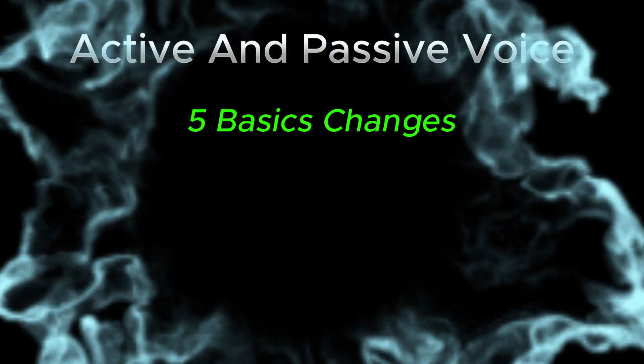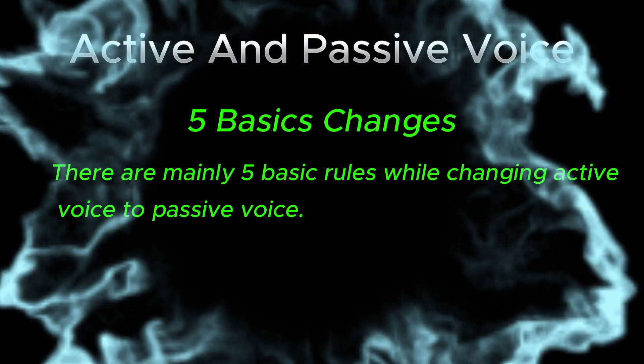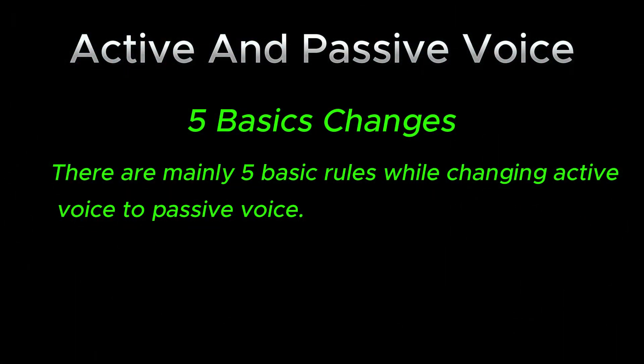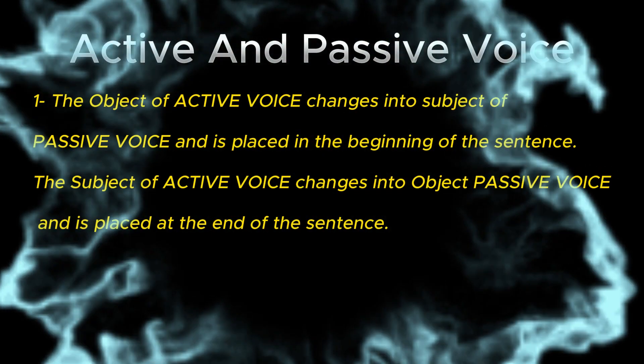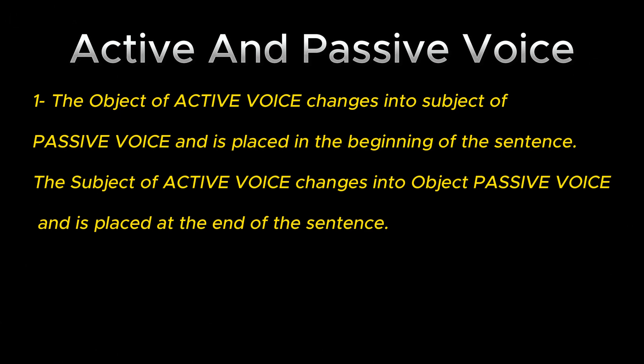There are mainly five basic rules while changing active voice to passive voice. One: the object of active voice changes into the subject of passive voice and is placed in the beginning of the sentence. The subject of active voice changes into the object of passive voice and is placed at the end of the sentence.